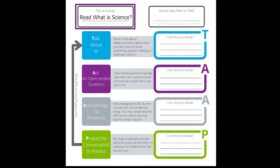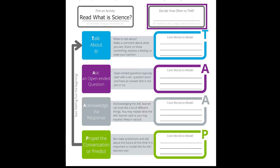The first step to tap your way through is to pick an activity. We've already done that — we're reading the book What is Science? Next, you decide how often you will stop and tap. For this story, we suggest tapping after every page of the book.